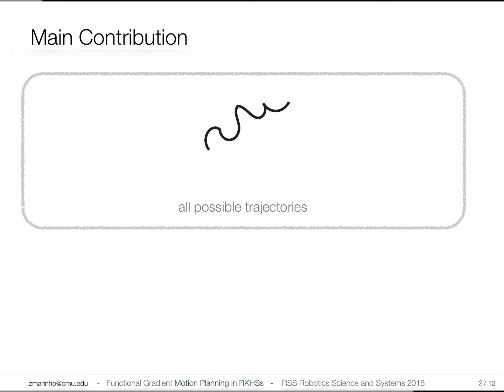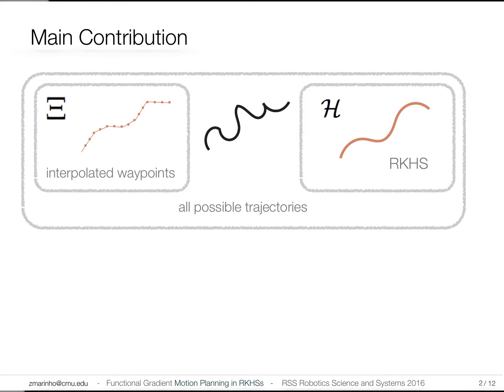Typical approaches optimize trajectories as functions, but they commit in practice to a discretized version where a trajectory is considered as a series of waypoints or interpolated waypoints. Here we intend to represent trajectories in function space directly.